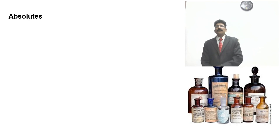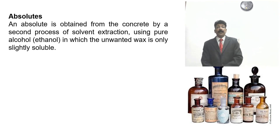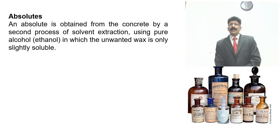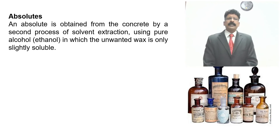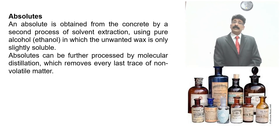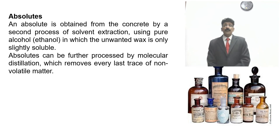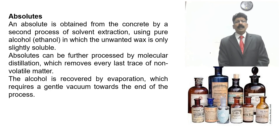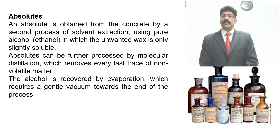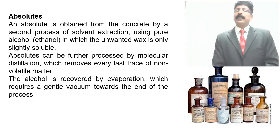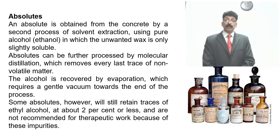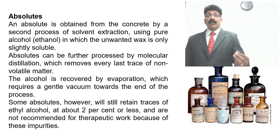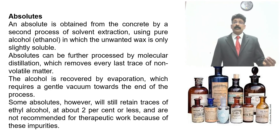Absolutes are obtained from the concrete by a second process of solvent extraction using pure alcohol (ethanol), in which the unwanted wax is only slightly soluble. Absolutes can also be further processed by molecular distillation to remove the last trace of non-volatile matter. The alcohol is recovered by evaporation under a gentle vacuum at low temperature. Some absolutes will still retain traces of ethanol — at about 2% or less — and are therefore not recommended for therapeutic work because of these impurities.